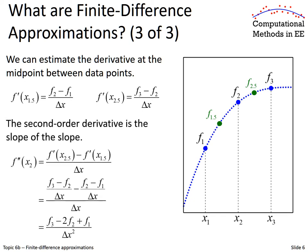Now we might want to know the second-order derivative at point X sub 2. A simple way to do this is to think of the second-order derivative as the derivative of our first-order derivative, or the slope of the slope. The rise is the slope at X2.5 minus the slope at X1.5, divided by the distance between those points (delta X). We substitute those two first-order finite difference approximations in, turn the algebra, and arrive at a finite difference approximation for a second-order derivative at point X2.